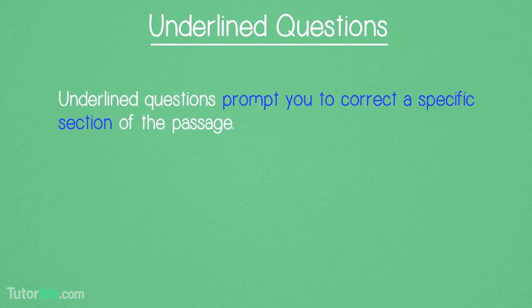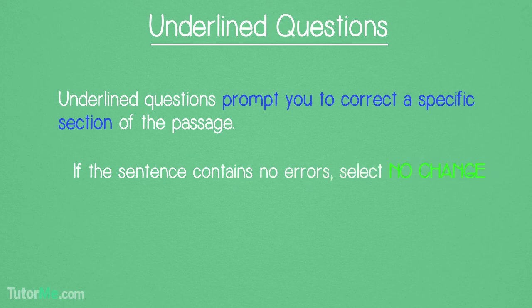Let's talk about the different types of questions you'll see on the English Test. We'll start with the most common type, underlined questions. Underlined questions prompt you to correct a specific section of the passage. The first answer choice on every underlined question will be no change. If the underlined portion contains no errors, then no change is the answer.